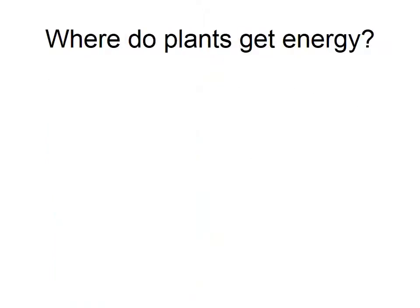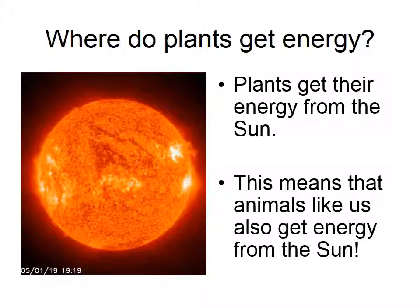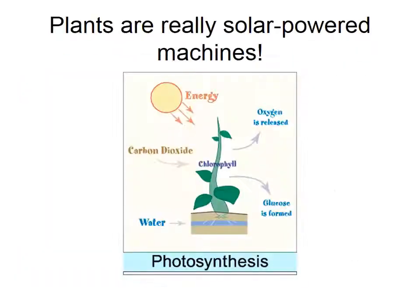But we still haven't discovered the true source of that energy, because plants have to get their energy from somewhere. And where do they get their energy? They get their energy from the sun. So we could say that animals, because we eat plants, get our energy from the sun. You may remember from biology learning about photosynthesis, where water, carbon dioxide, solar power, and chlorophyll all come together through photosynthesis to form glucose in the plants - and that's what gives animals and us our energy.